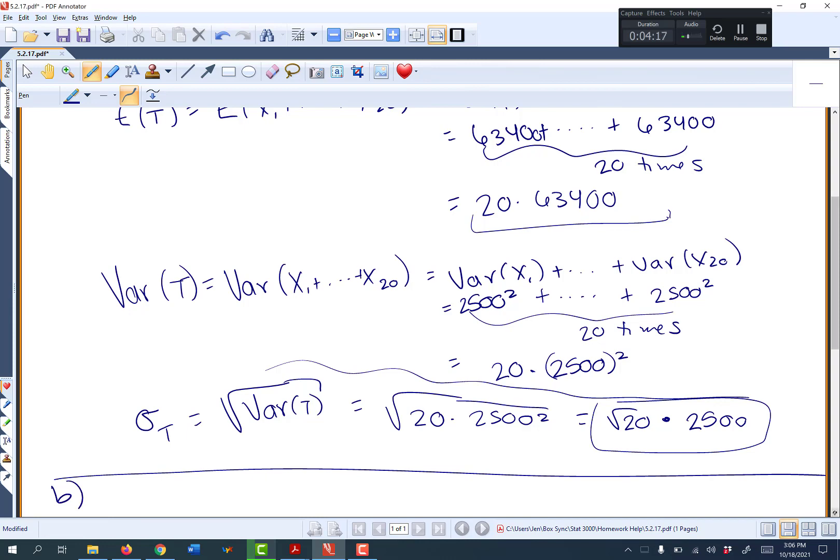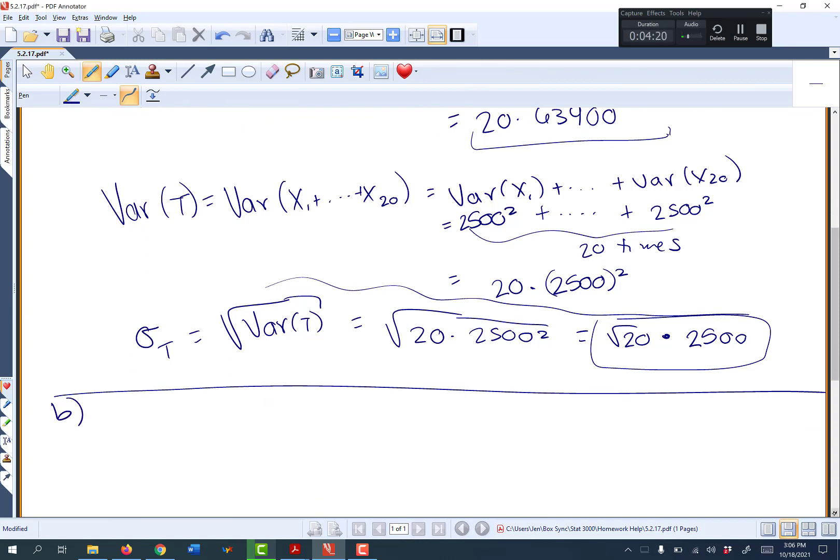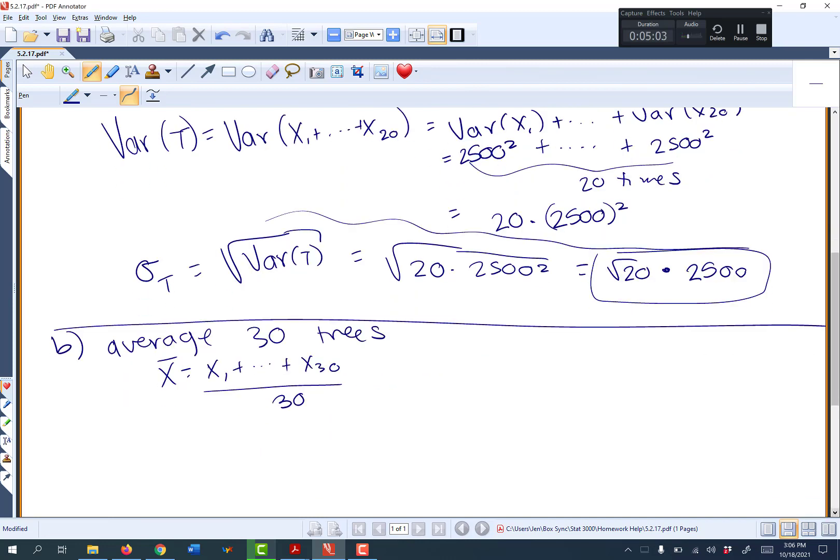Let's try part b. So now we want the mean and standard deviation for the average of 30 trees. So the average of 30 trees. Well, this one's going to be a little bit different because now if I want the average instead of like a total, I'm going to say, well, I'm going to have to do x1 plus everything up to x30 divided by how many variables I have. And so I have 30 variables. So we can go through, we can do all the rules just like I did up here. You can look back at section 2.6 and figure out what the rules are for this.